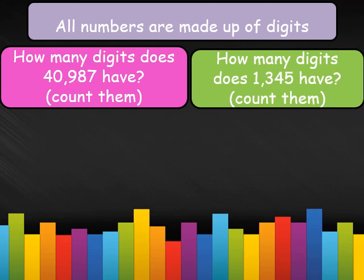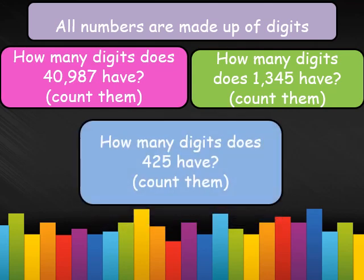Now, how many digits does the number on the green bar have? It has four digits: 1, 3, 4, 5. If you count them, they have four digits. How many digits does the number on the blue bar have? It has three digits: 4, 2, 5. If you count them, it is a three-digit number. So we say that 425 is a three-digit number.